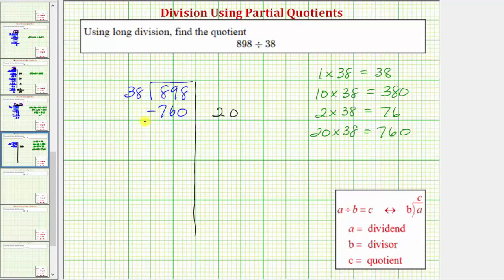And now we subtract. Notice by subtracting, we're removing 20 38s from 898. And that's why this is called a partial quotient. So subtracting, notice how we get 138.